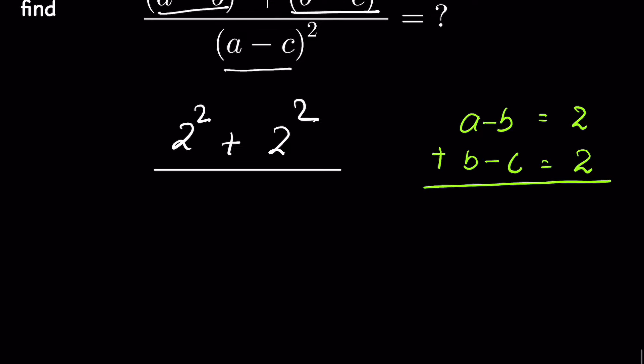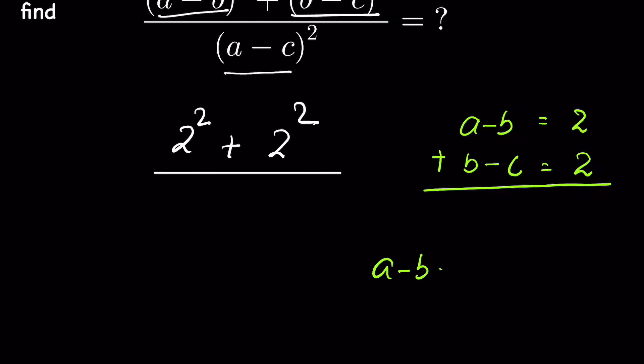When we add these two, then we have A minus B plus B minus C is equal to 4. Minus B plus B gets cancelled, so A minus C is equal to 4.